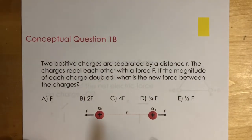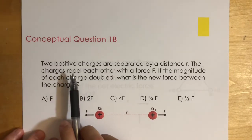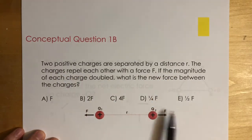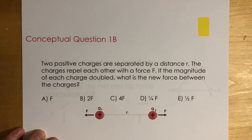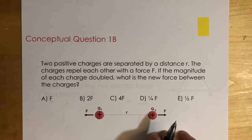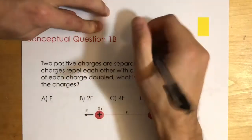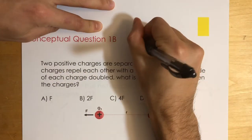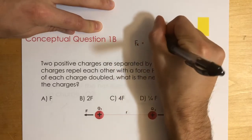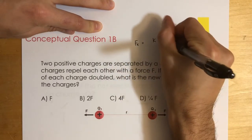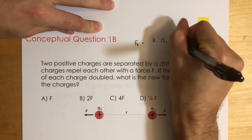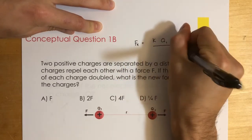Let's look at the next question. Two positive charges are separated by distance r and repel each other with force F. If the magnitude of each charge is doubled, what is the new force between the charges? We want to use the formula: force of electricity equals k·q1·q2 over r squared.